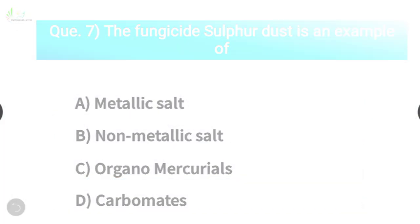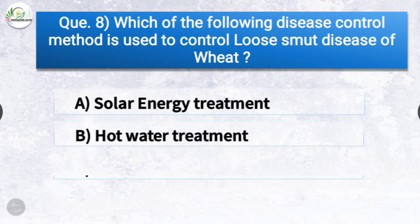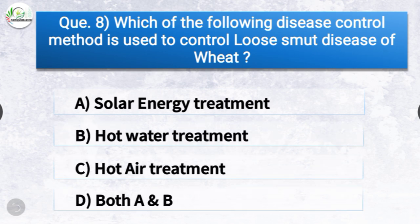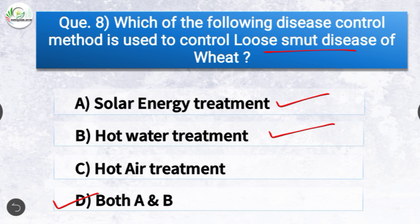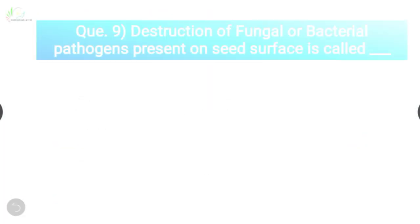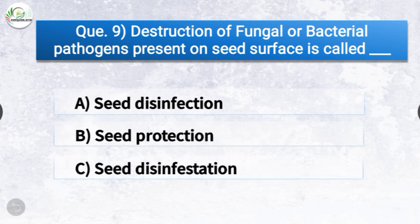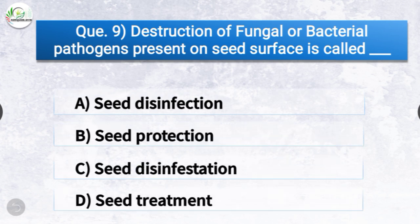Question number eight: Which of the following disease control methods is used to control loose smut disease of wheat? The options are solar energy treatment, hot water treatment, hot air treatment, or both A and B. The correct answer is option D, both A and B — solar energy treatment and hot water treatment. Both treatments are used to control loose smut disease of wheat.